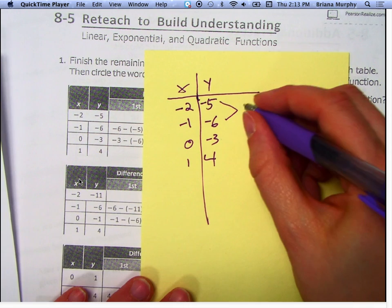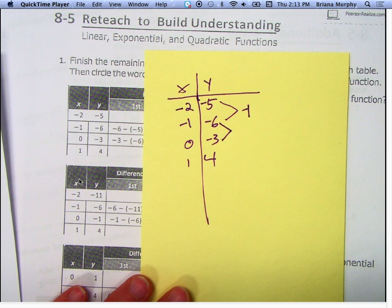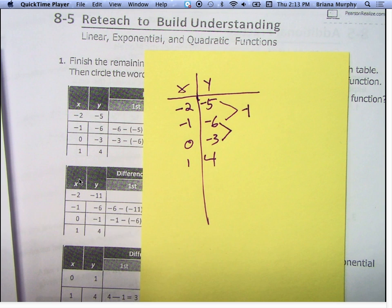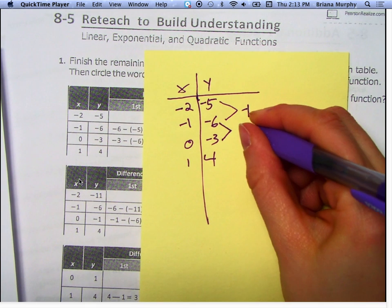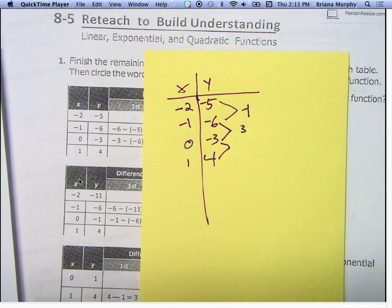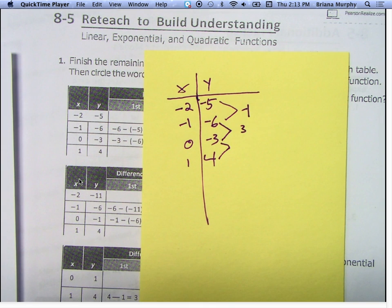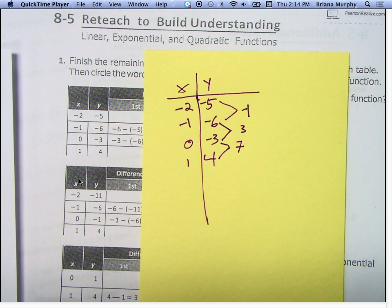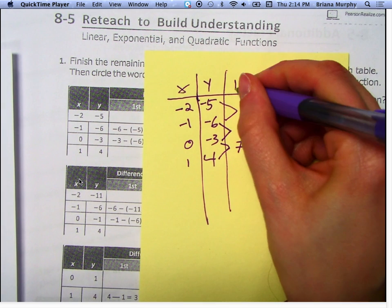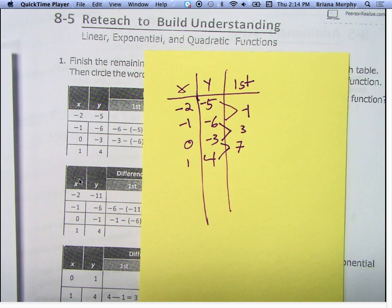Negative 5 minus 1 more is negative 1. Negative 6 to get to negative 3 — how do I get from negative 6 to 3? I added 3. And negative 3 to 4 — you owe me $3, you get 4. So you're just going one by one and subtracting them to see what you get. This is called the first differences.